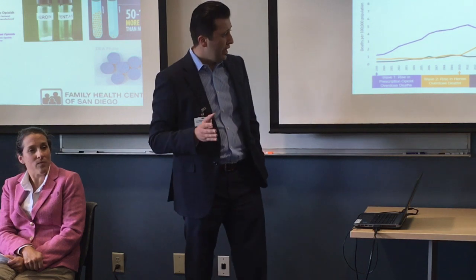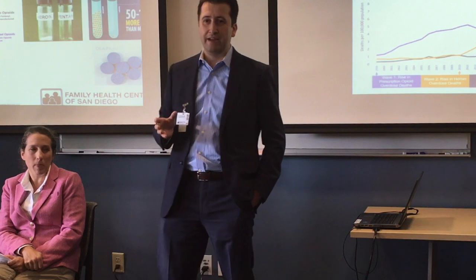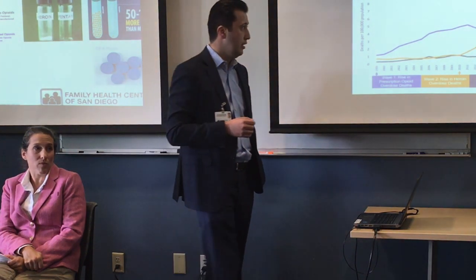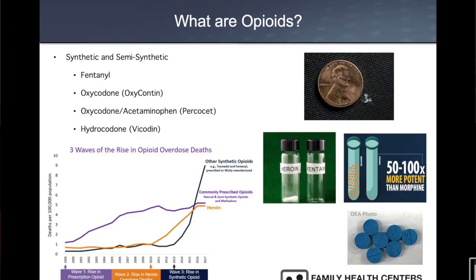Right around 2009 to 2010, we started getting very savvy about the problem that overprescribing was contributing to addiction. So we started pulling back on prescribing, and then heroin started taking off as the next cheap and available drug on the market. Currently, we have a third wave: fentanyl, which started taking off right around 2012 to 2013. You can see the line shoot up — that's what's causing a lot of overdose deaths in the community.